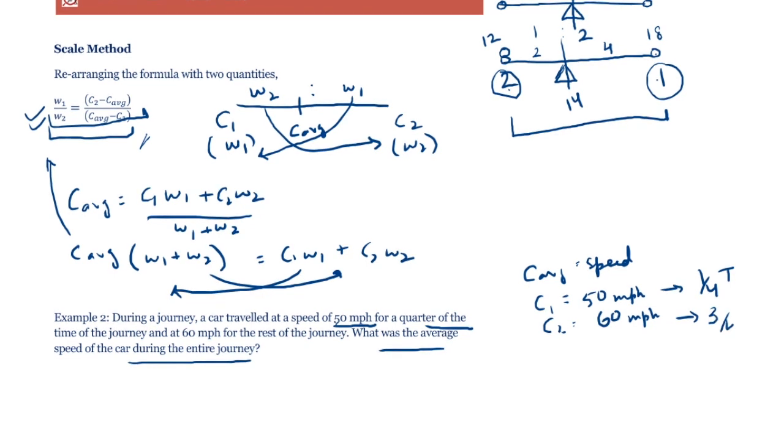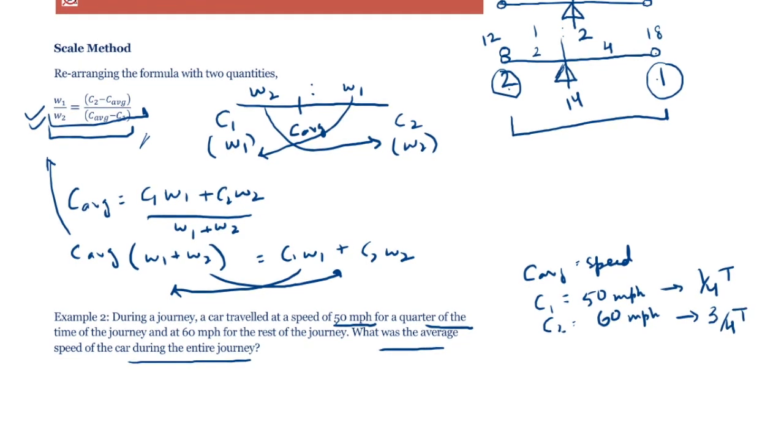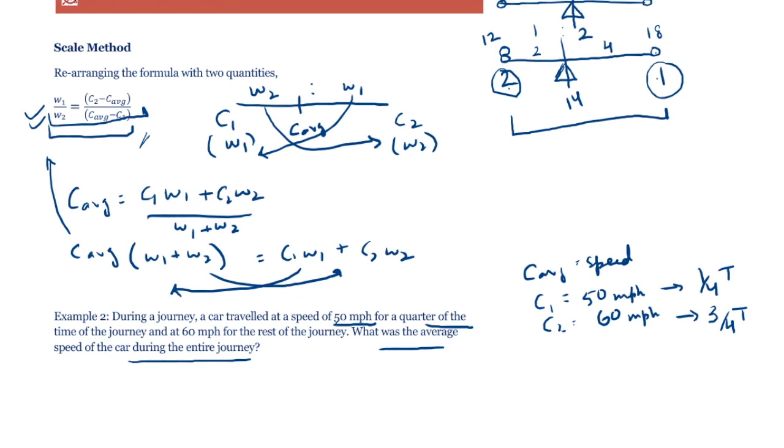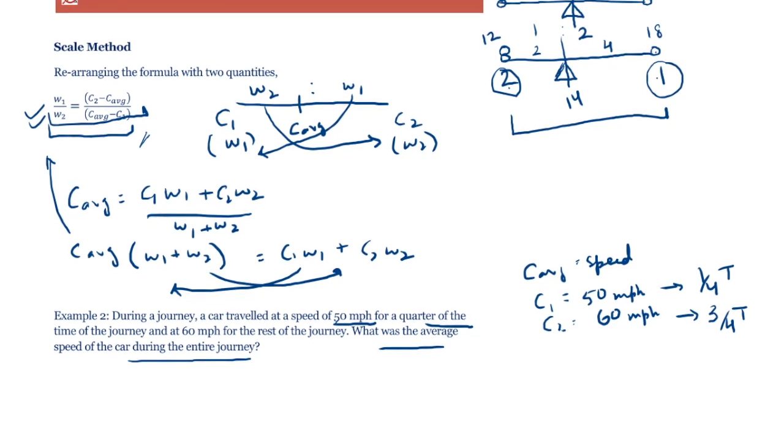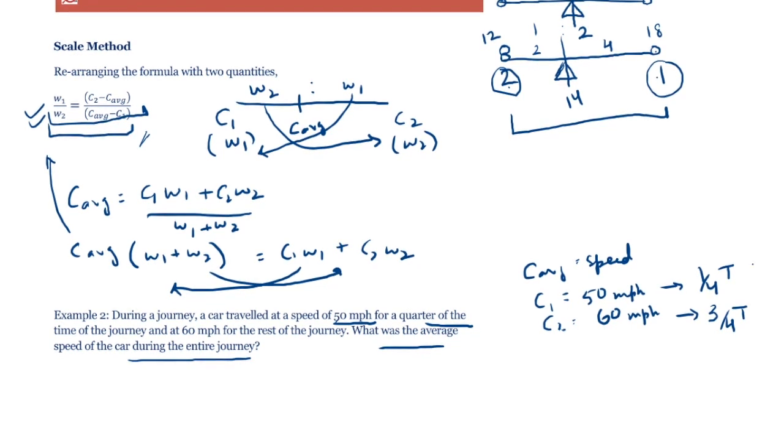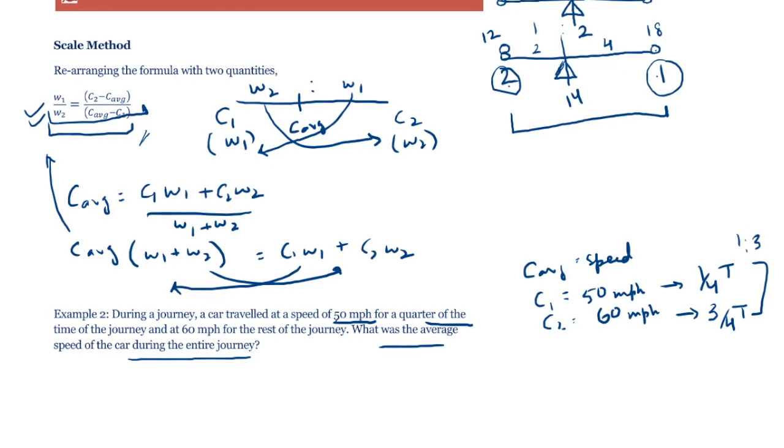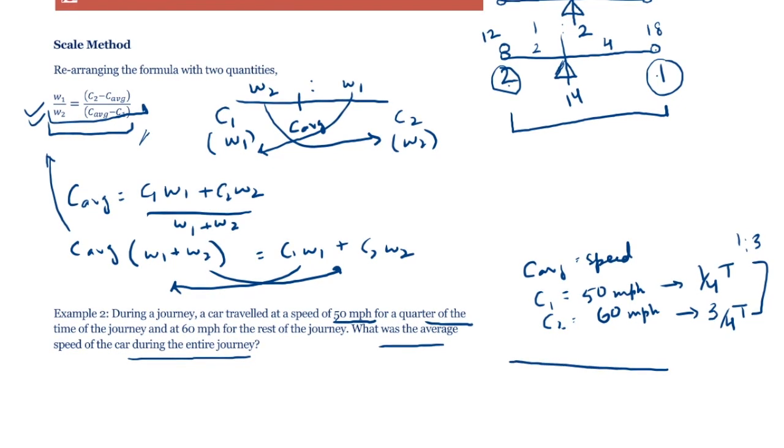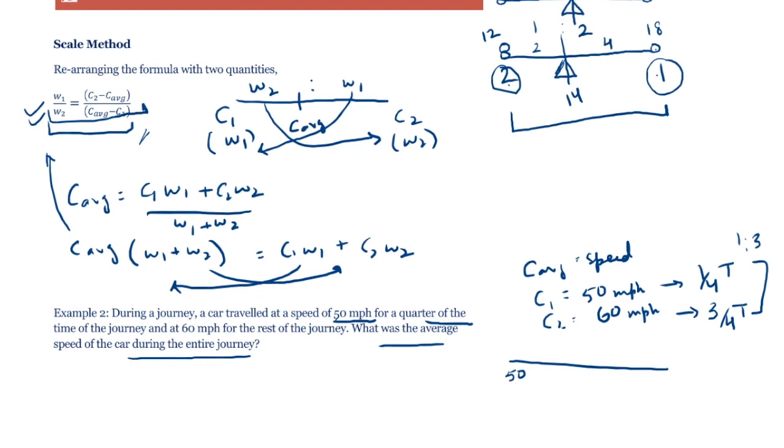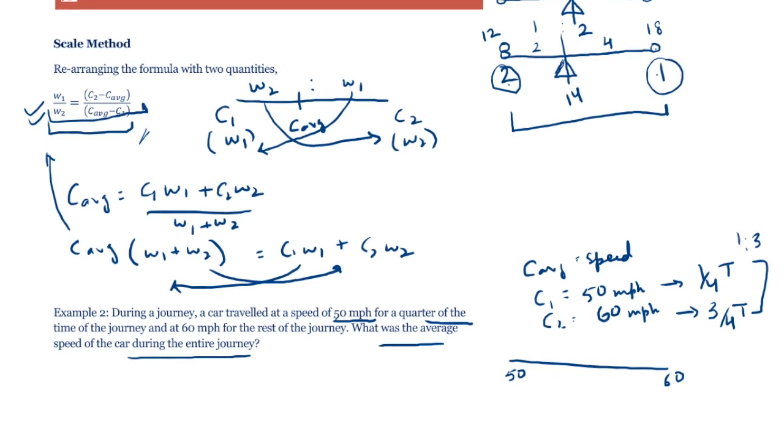50 mph was maintained for a quarter of the time, so one-fourth of the time, and 60 mph was maintained for the rest, three-fourths of the time. So the weights of 50 and 60 mph are in the ratio 1 is to 3.